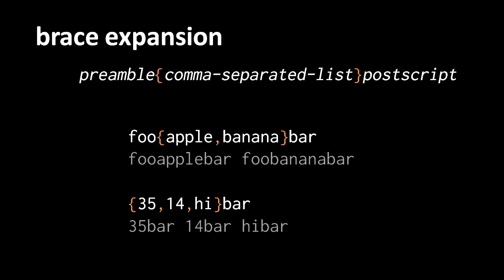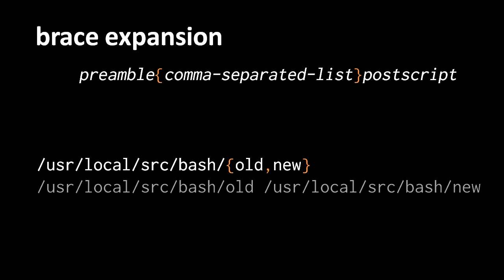Those are simple examples of brace expansion. When would this be useful? With some commands you end up writing a series of arguments that are very similar but for small differences. For instance, if two file paths are identical except for one component, you can write '/usr/local/src/{old,new}' to produce two separate arguments — both the same except for the last path component.